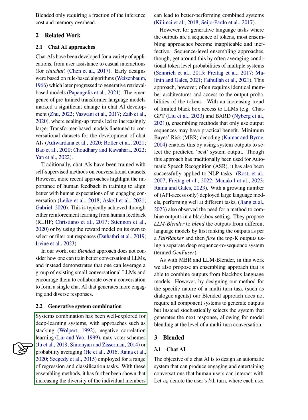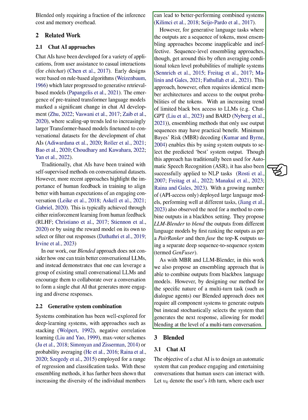Sequence-level ensembling approaches get around this by often averaging conditional token-level probabilities of multiple systems. With an increasing trend of limited black-box access to LLMs, ensembling methods that only use output sequences may have practical benefit. Minimum Bayes Risk decoding enables this by using system outputs to select the predicted best system output. They propose LLM Blender to blend the outputs from different language models by first ranking the outputs as per a pair ranker and then fuse the top K outputs using a separate deep sequence-to-sequence system, termed GenFuser.